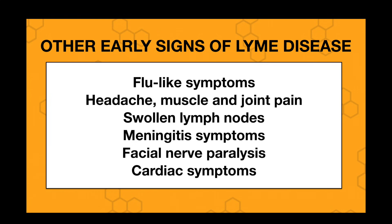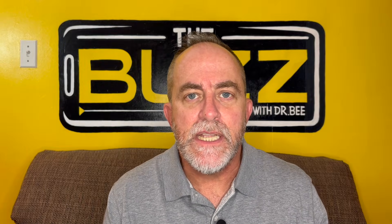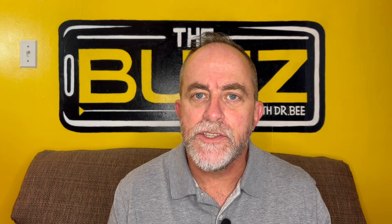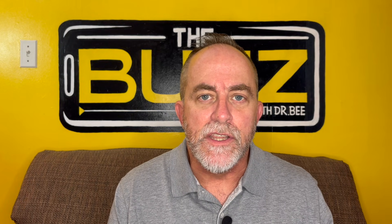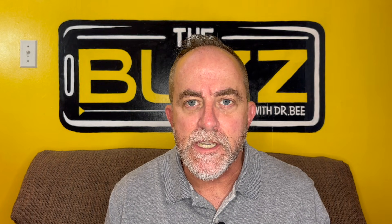Untreated Lyme disease can cause late symptoms months or even years later, like chronic joint problems and all sorts of neurological problems, so hopefully we figure this out long before that happens. Clinical diagnosis is key — we diagnose it from the history and physical exam, which is a lot easier if we see that classic bullseye rash. There are also blood tests and antibody tests, and you can look for DNA from the bacteria themselves. However, if done very early they may be negative, so a doctor may need to order those tests more than once.